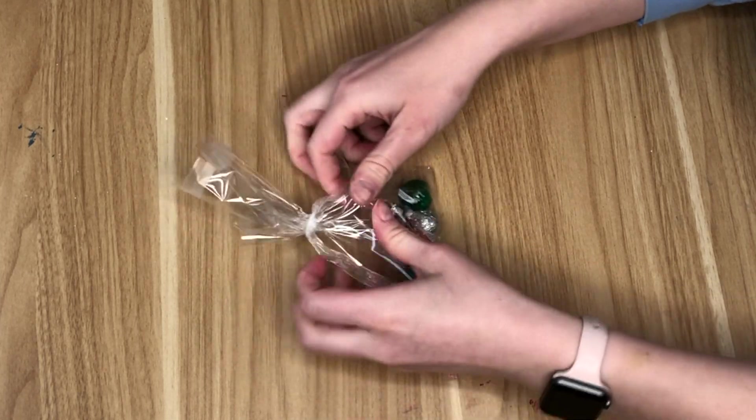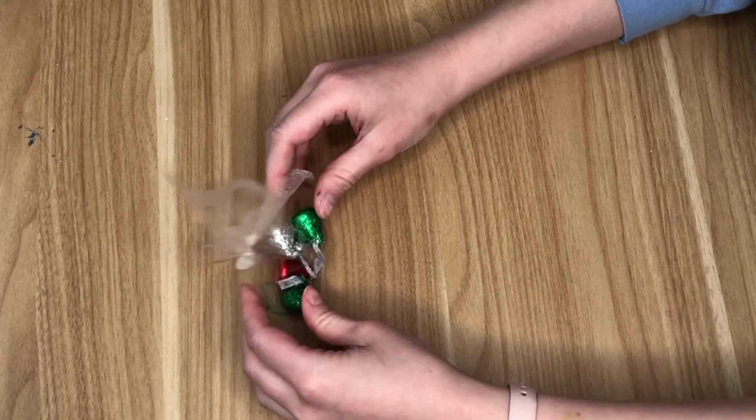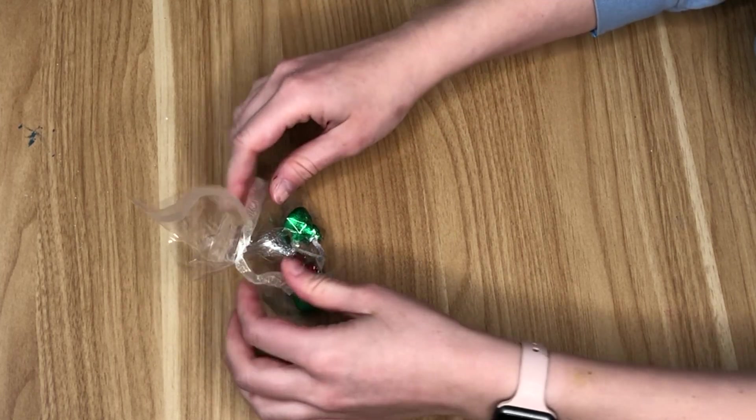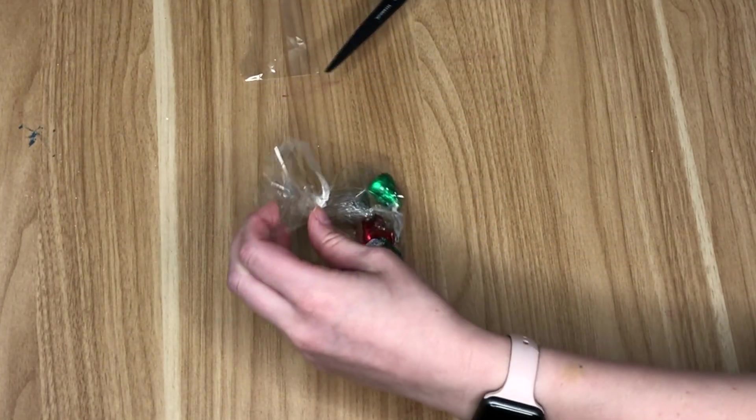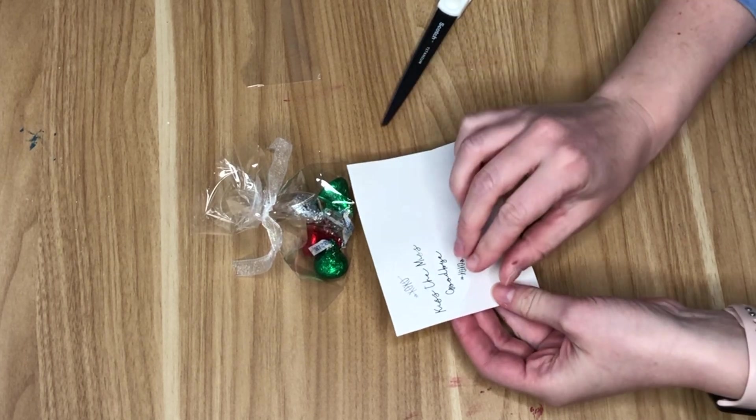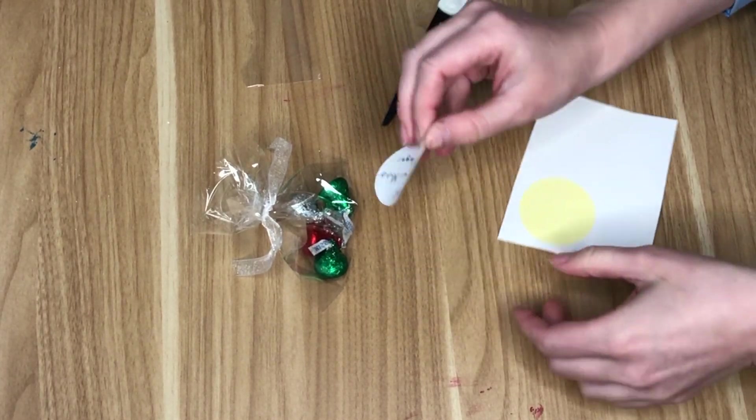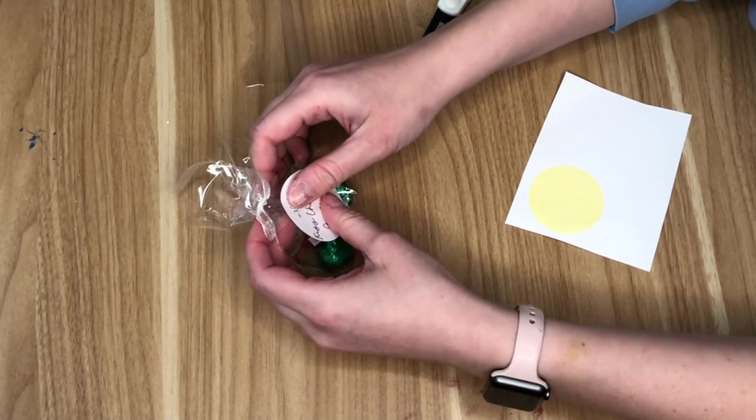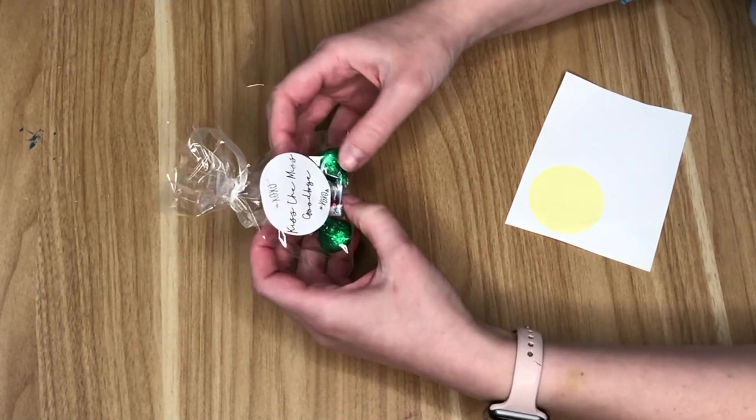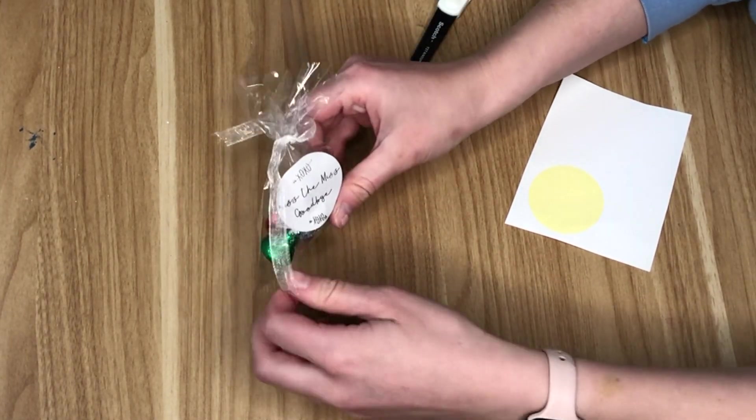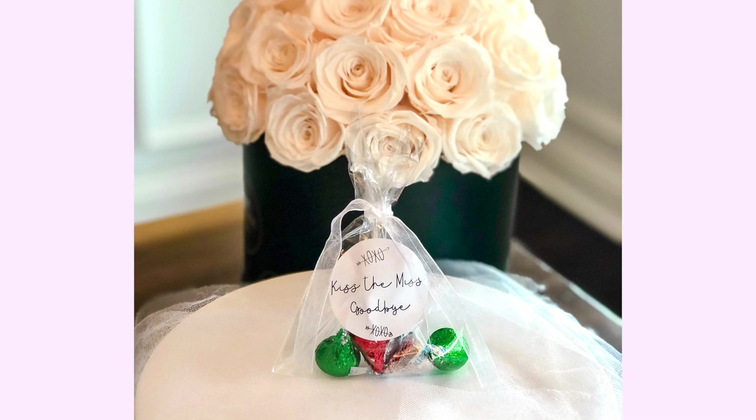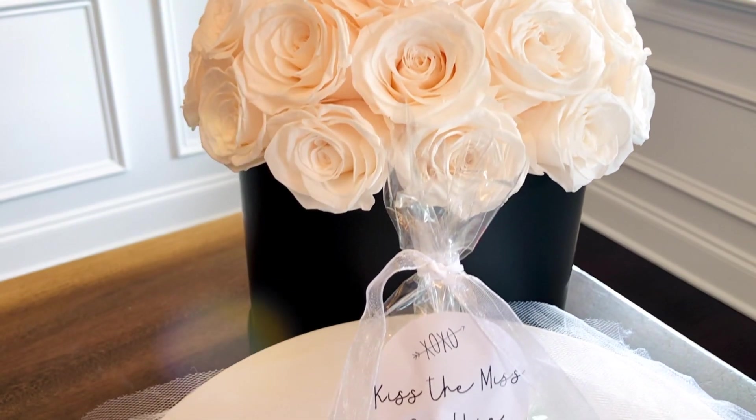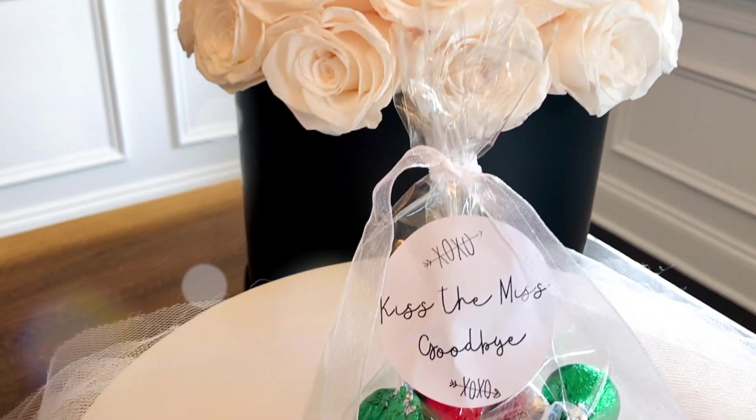And then I had some leftover ribbon, kind of like a tulle ribbon that I used to tie the bag together. And then I just cut off the top and kind of fluffed it so it looked nice. I wrote kiss the miss goodbye on some sticker paper and cut that out in a circle shape, but you could do a heart or even a diamond would be cute. And then I stuck that on the bag and it's a great really quick favor to have at your bridal shower.